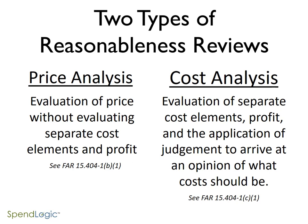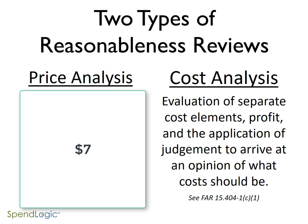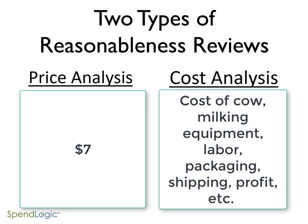There are two basic types of price reasonableness reviews: price analysis and cost analysis. Price analysis involves taking a look at the total price, while cost analysis involves reviewing the separate elements of cost and profit. Using the milk example, price analysis would involve looking at the $7 per gallon that was proposed by the supplier. If this was a cost analysis, we would be working with that supplier to understand how the $7 breaks down into the cost of the cow, the milking equipment, milking labor, packaging, shipping, and profit.